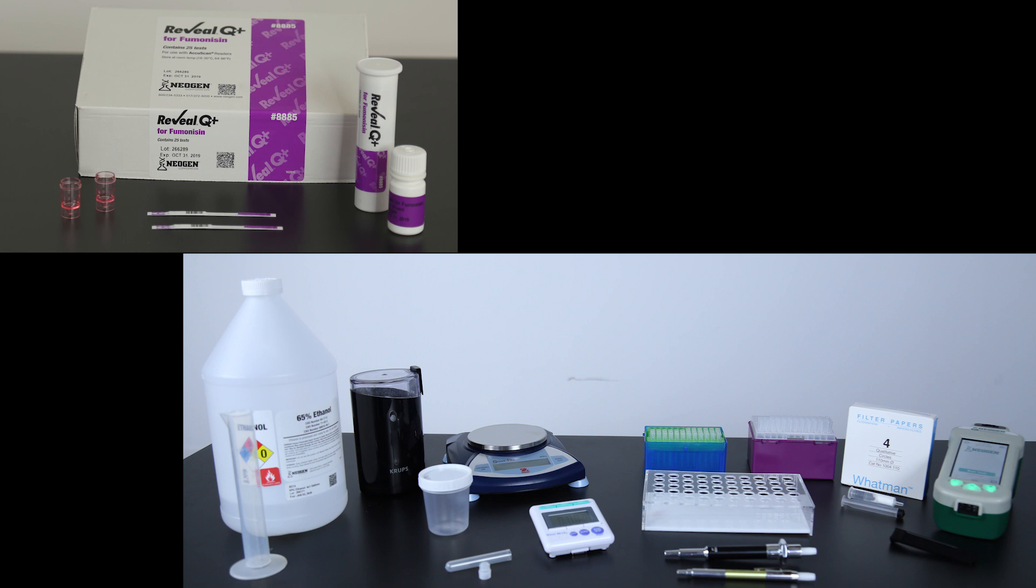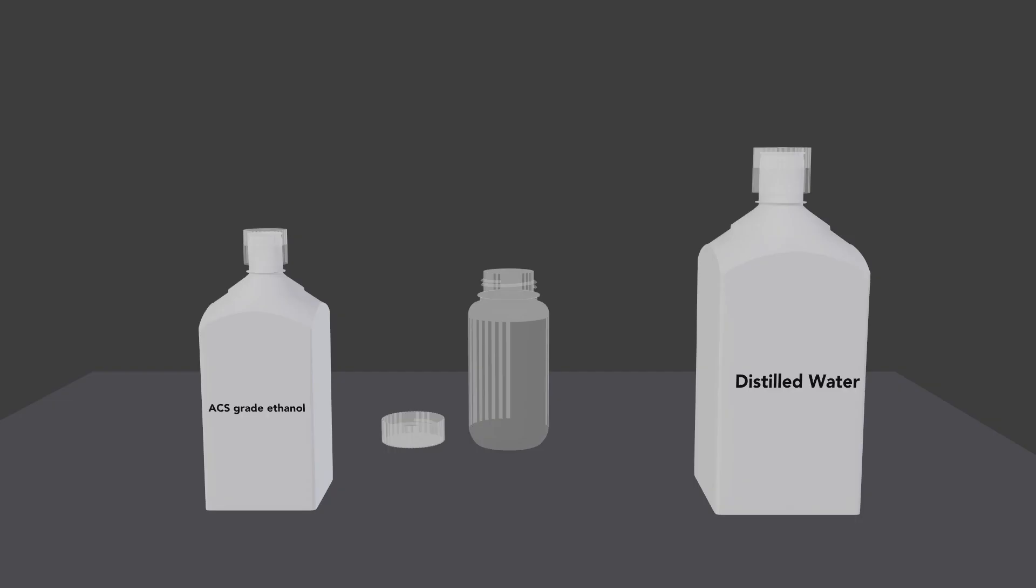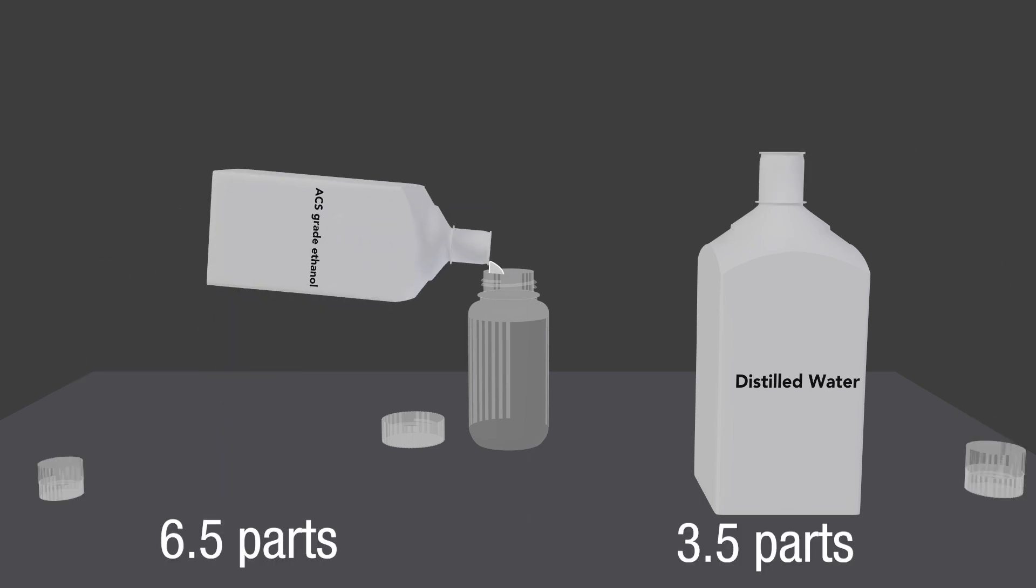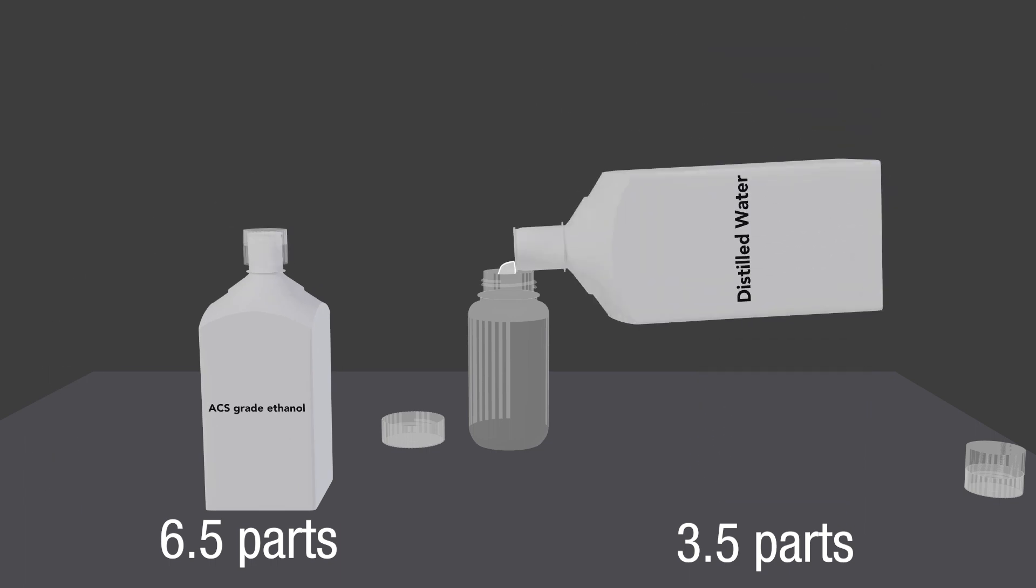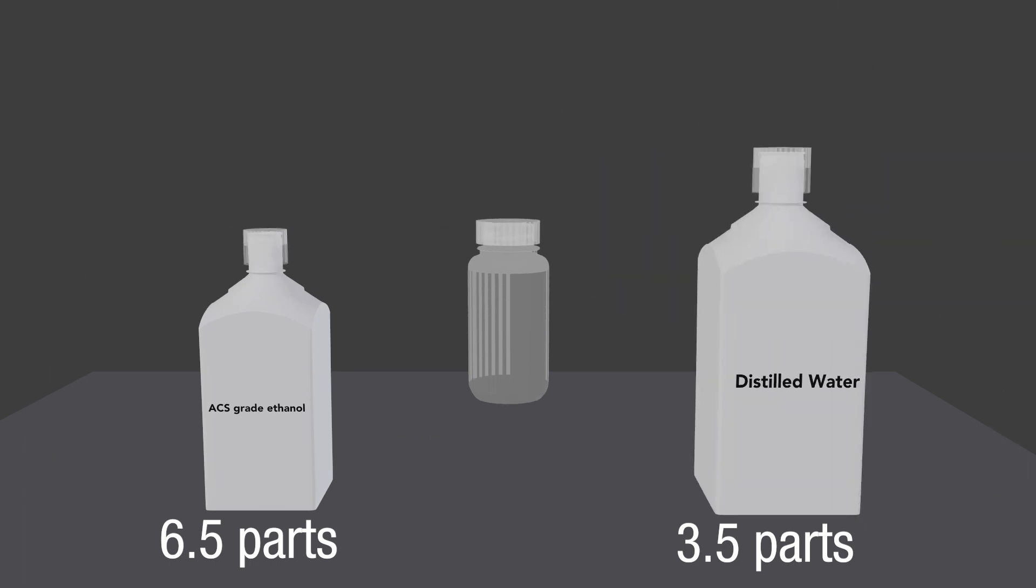To prepare the sample, begin by gathering all the materials required. If not using Neogen's prepared solution, make a 65 percent ethanol solution by mixing 6.5 parts ACS grade methanol with 3.5 parts distilled or deionized water for each sample.